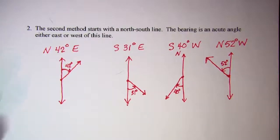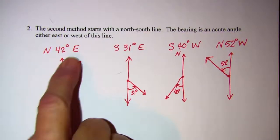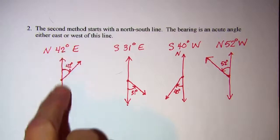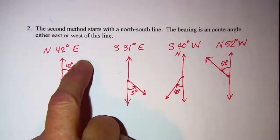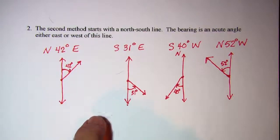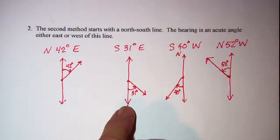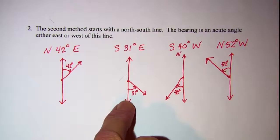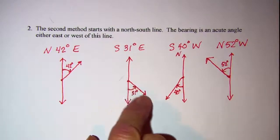The second method starts with a north-south line. The bearing is an acute angle either east or west of this line. So a north 42 degrees east bearing — you start with your north-south line, and since you're going east, your bearing is 42 degrees off the north line in this direction. A bearing of south 31 degrees east: from your south line you go east 31 degrees, so your bearing would be in this direction.